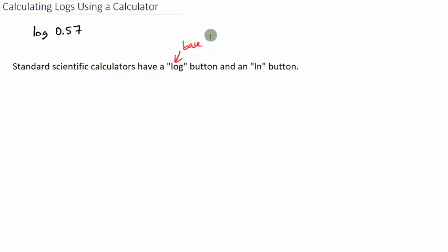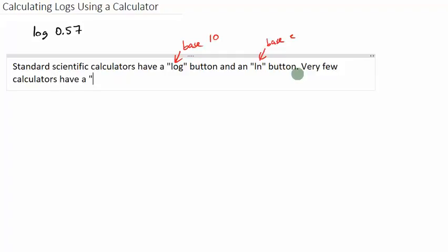So this is base 10 and this is base E. Very few calculators have a button that looks like this, where you can type in any base. Now, there are some scientific calculators that have this. Some Casios have this, some Texas Instruments have it. But you have to look for it when you're buying a calculator.